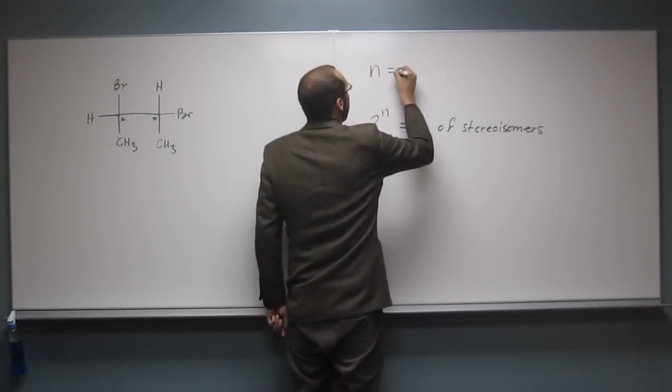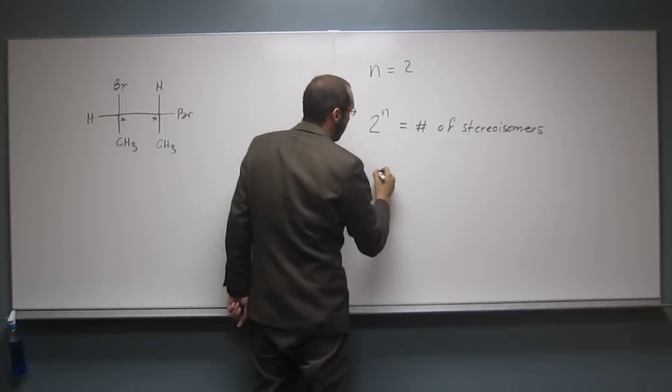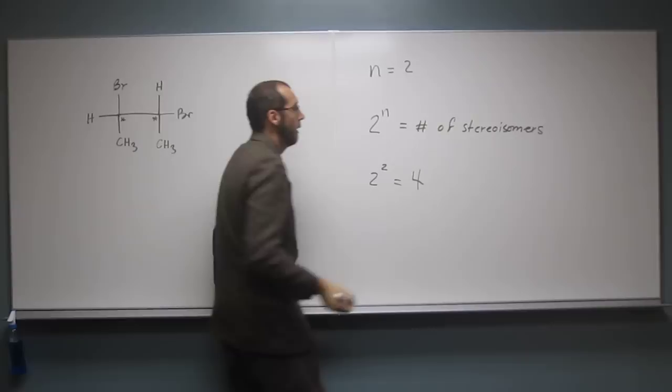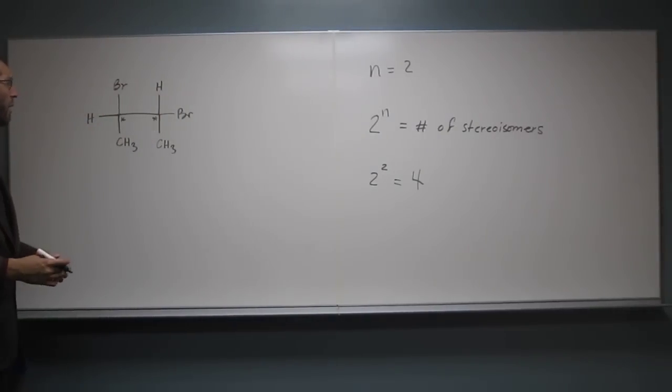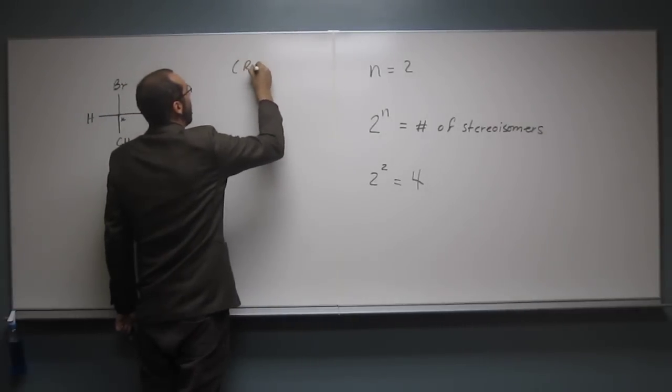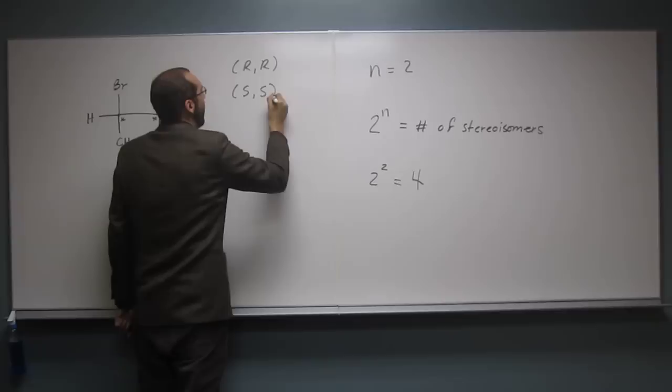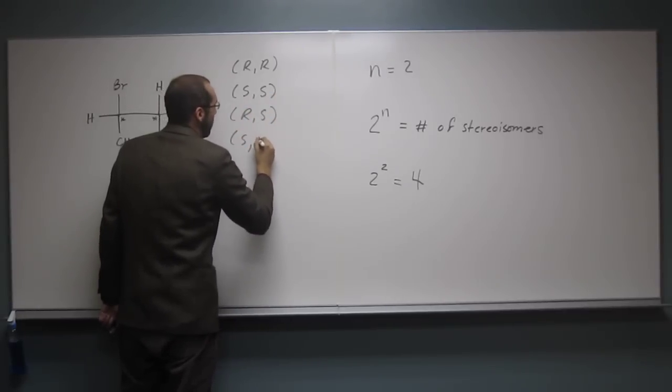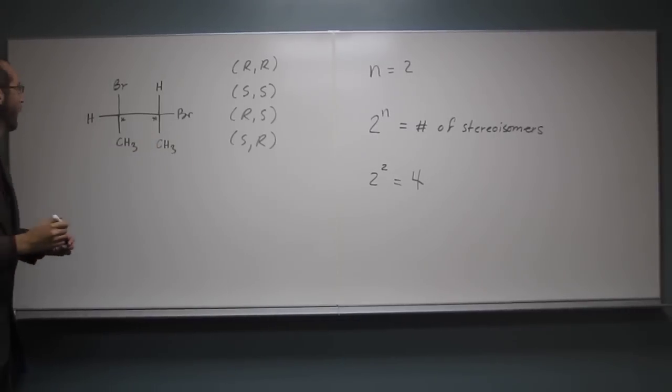So with n equals two, the number of stereoisomers should be two to the two, which equals what? Four. Four. So we would think that we would have four of these, right? So what would those be? Well, we would have the R,R, the S,S, right? The R,S, and the S,R. Does everybody agree? Those would be the four that we would have, right?